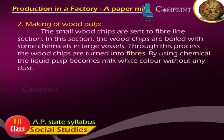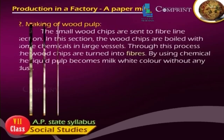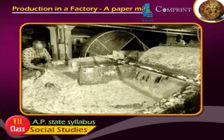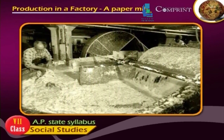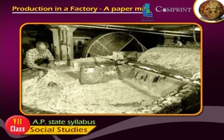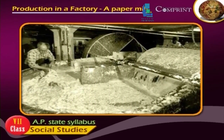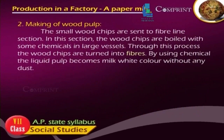Stage 2 — Making of wood pulp: The small wood chips are sent to the fiber line section. In this section, the wood chips are boiled with some chemicals in large vessels. Through this process, the wood chips are turned into fibers. By using chemicals, the liquid pulp becomes milk-white in color without any dust.